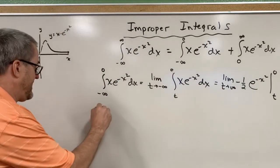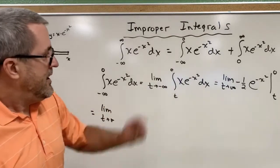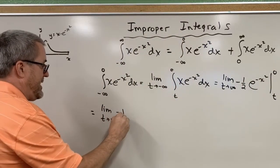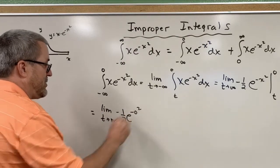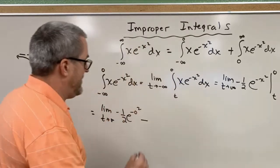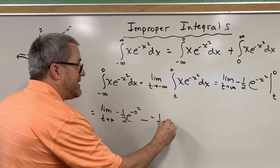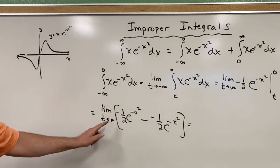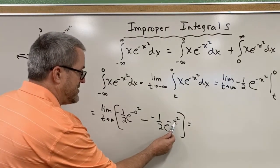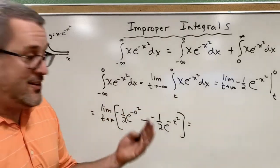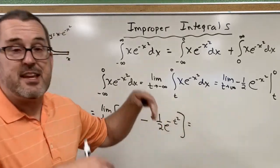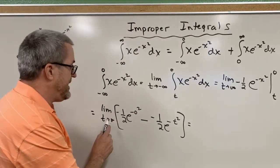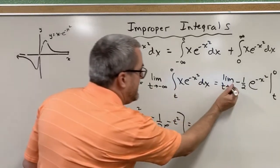By the fundamental theorem of calculus we evaluate from t to zero, then see what happens as t goes off to negative infinity. Substituting zero in for x gives negative one-half times e to the negative zero squared. Substituting t in for x gives negative one-half times e to the negative t squared. As t goes off to negative infinity, squaring a negatively large number gives a positively large number, but then we apply the negative exponent — so it's one over e to a large power, which is really, really small, approaching zero.